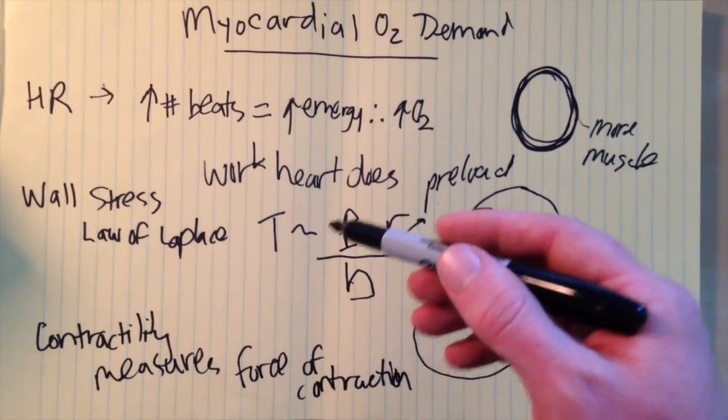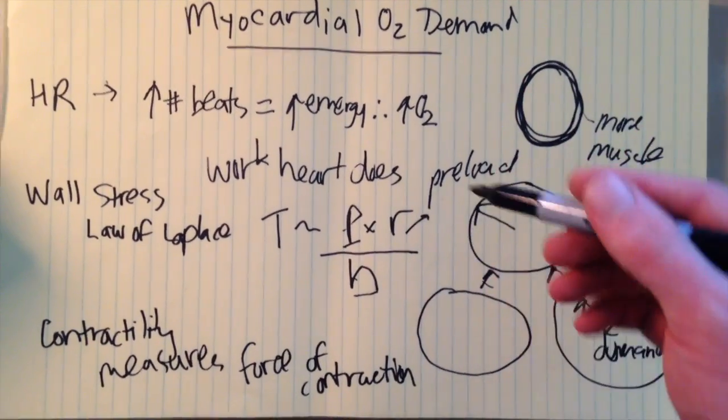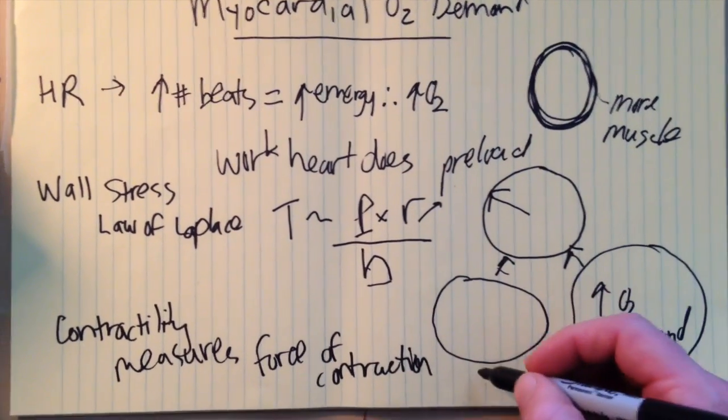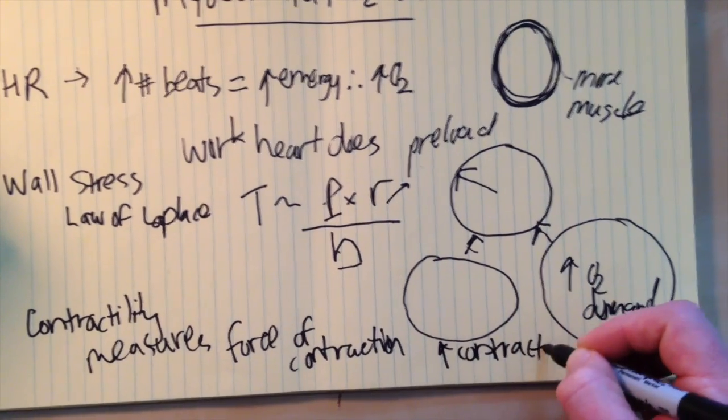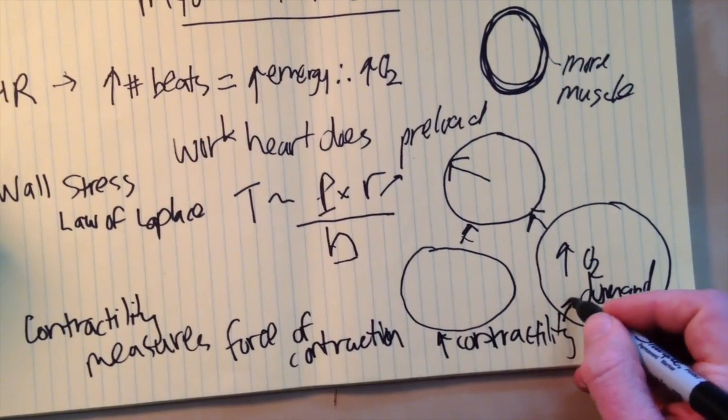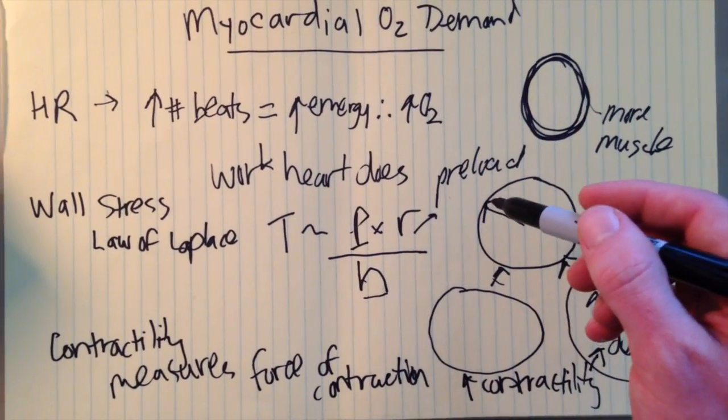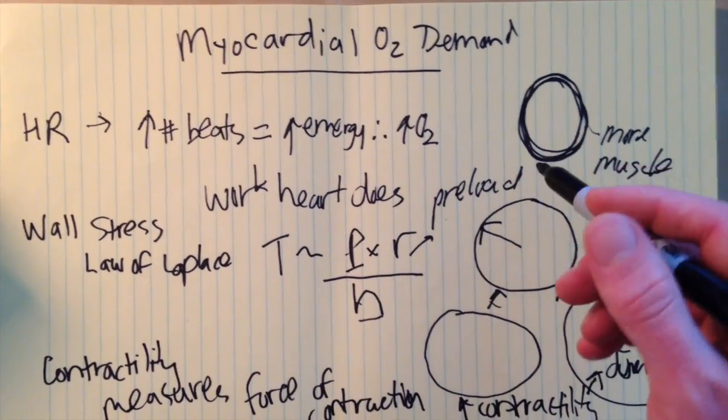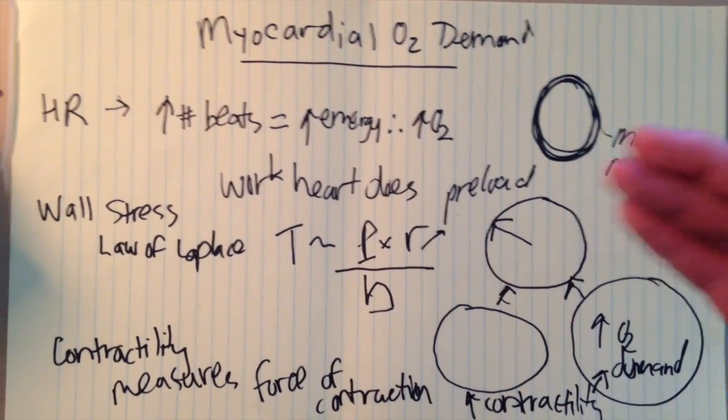And you can imagine that if the contractility is increased, if the muscle is contracting stronger, then you've got an increased oxygen demand. So increased contractility equals increased oxygen demand. And that works with our circle analogy as well. If that circle is going to be squeezing harder, it's going to require more oxygen.